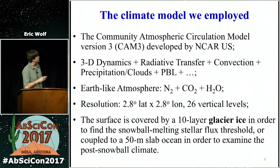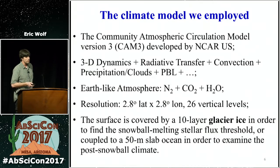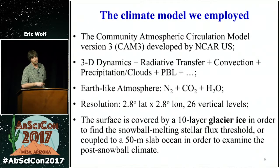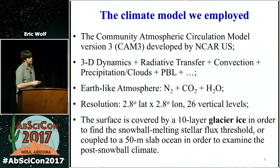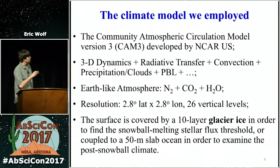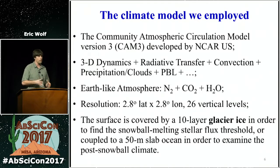June and colleagues used the Community Atmosphere Model version 3 from the National Center for Atmospheric Research. It's a three-dimensional climate system model with three-dimensional atmospheric circulation, radiation transfer, convection, precipitation, clouds, and boundary layer processes. You can include an ice model, ocean models of varying complexity. They assume an Earth-like atmospheric composition: one bar of nitrogen, just a little bit of CO2 — pre-industrial CO2 — and then water vapor, which is variable in the model depending upon your surface temperature.